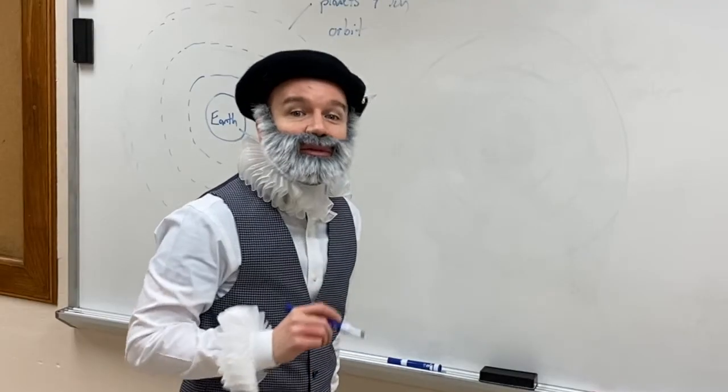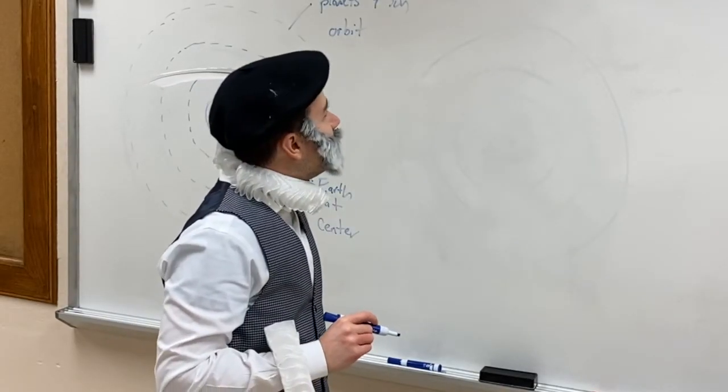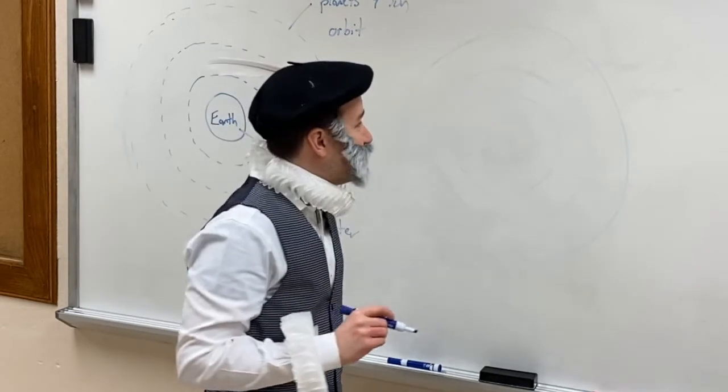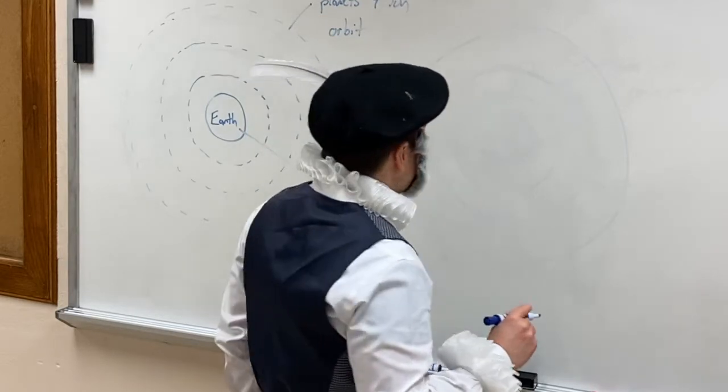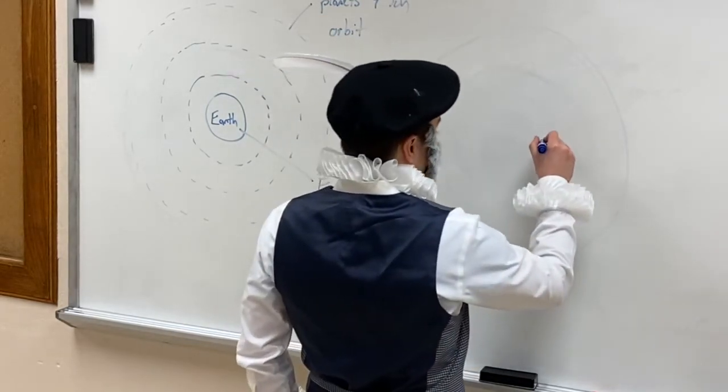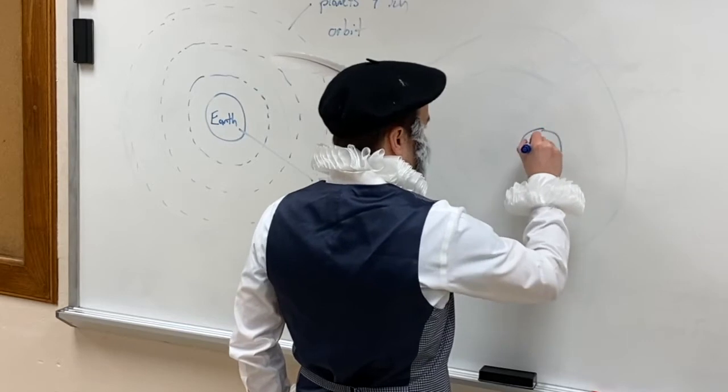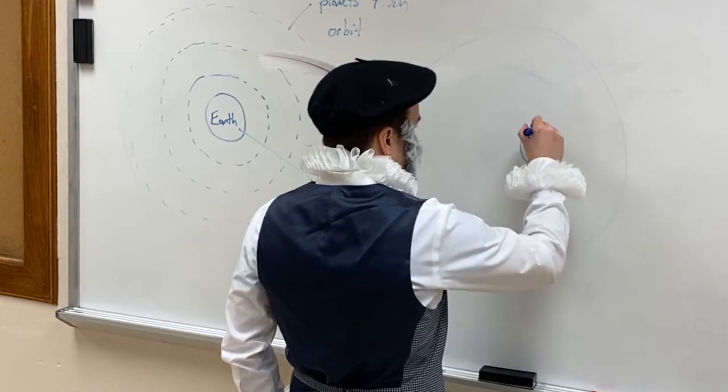Some time later there was a new thought. Nicholas Copernicus shook up the scientific community and proposed what if we put the Sun at the center of the solar system.